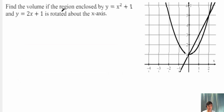In this question, it says find the volume of the region enclosed by y is equal to x squared plus 1, which is the parabola right over here, and y is equal to 2x plus 1, which is the straight line right over here. The region enclosed between them is rotated about the x-axis.